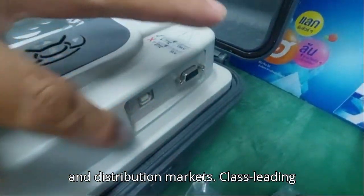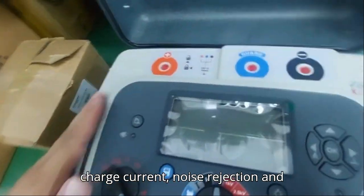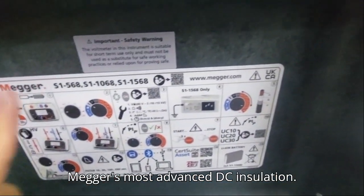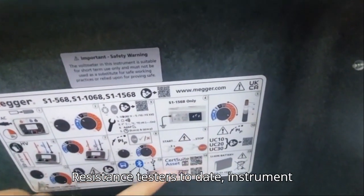These top-end instruments are targeted at power utilities and service companies working in generation, transmission and distribution markets. Class-leading charge current, noise rejection and software filters make the S1 series Megger's most advanced DC insulation resistance testers to date.